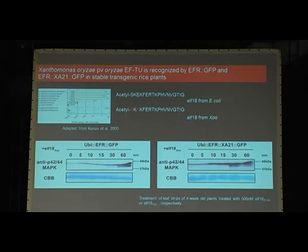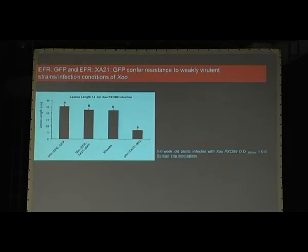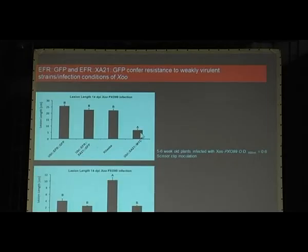The next step: EFR is potentially also able to recognize EF-Tu from Xanthomonas, so can we also improve rice by expressing EFR, make it more resistant to Xanthomonas? Our initial experiments were not very promising. This shows the lesion lengths after leaf clip inoculation of our strain we work most with, which is PXO99. You can see these two lines, EFR and especially EFR-XA21, are not different to Kitaake, whereas our control line, the XA21 line, is. Yet we used a slightly less virulent preparation of the same bacterial strain which shows lower lesions. With this less virulent prep, we definitely saw a reduction in lesion length when we expressed EFR or EFR-XA21 to a similar level to XA21.